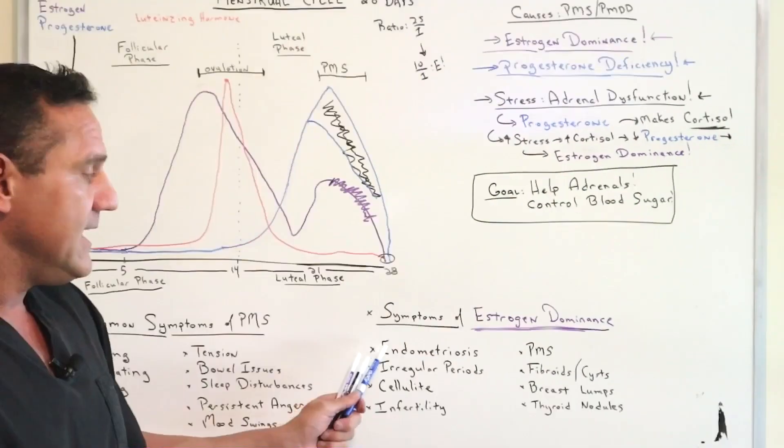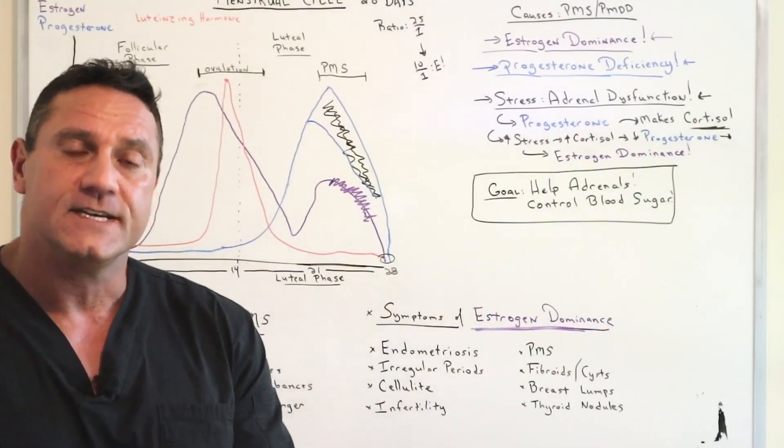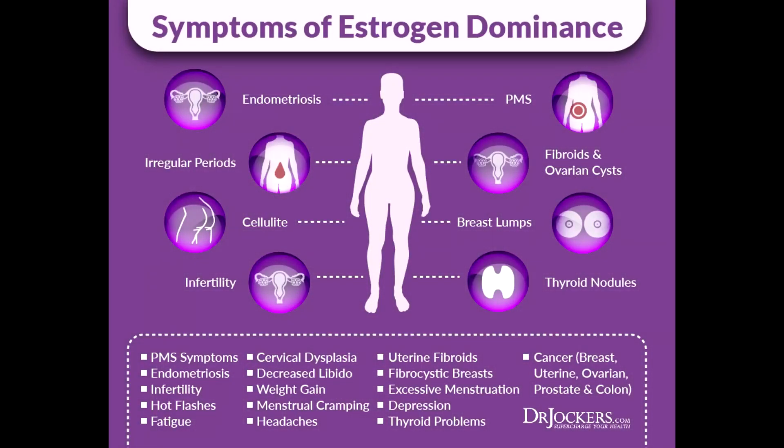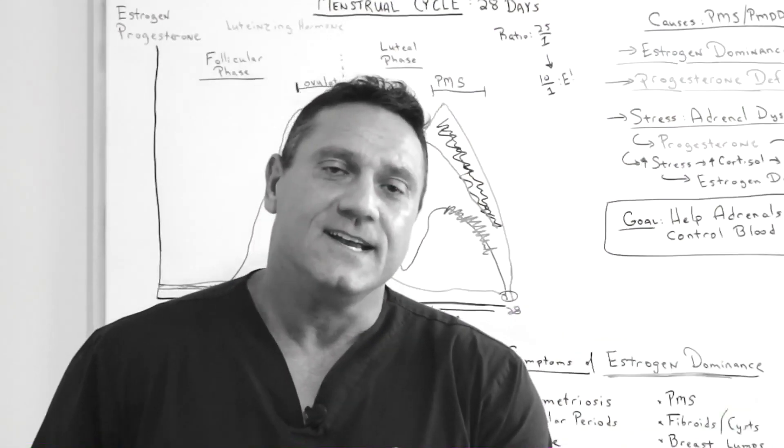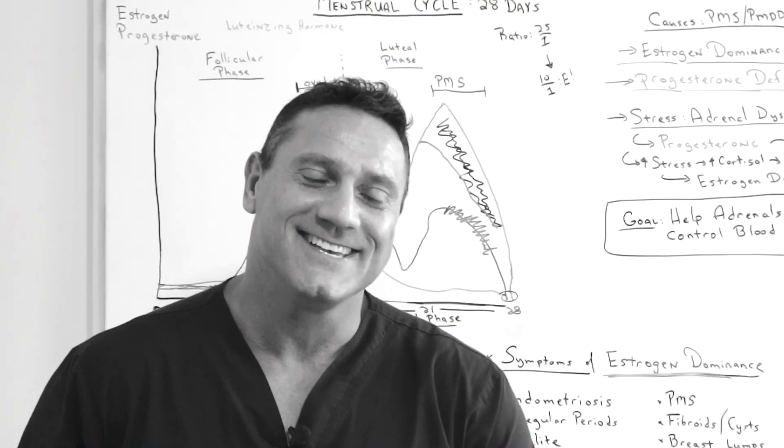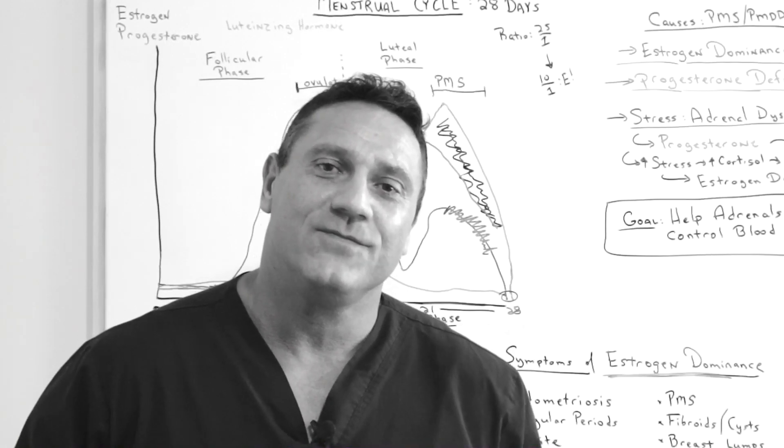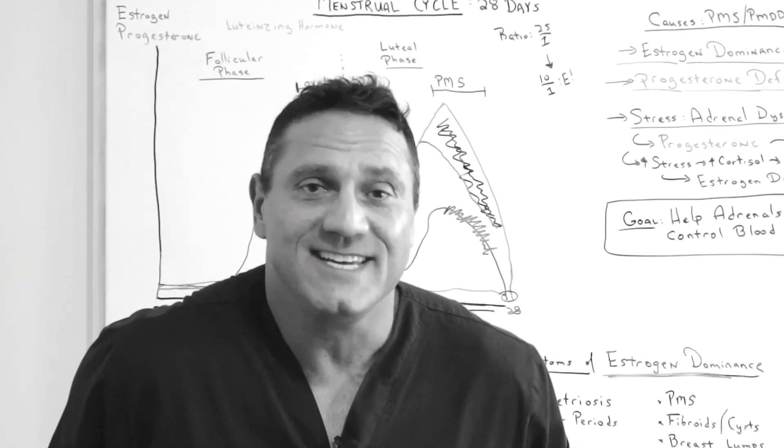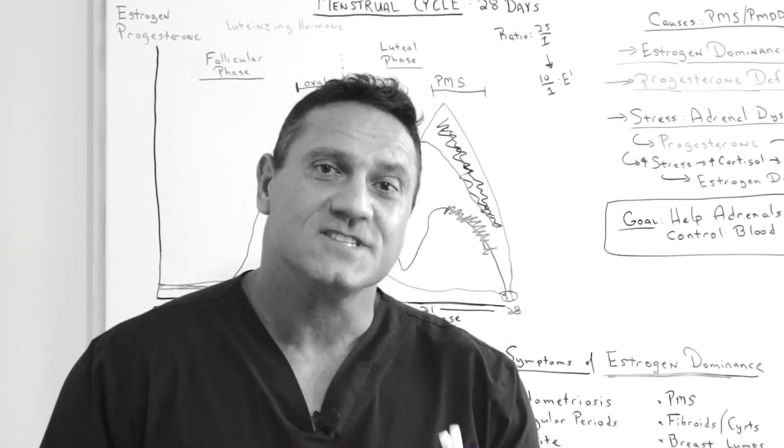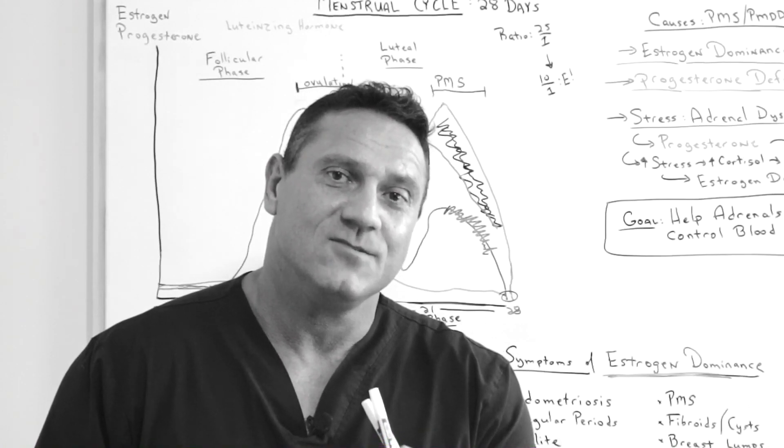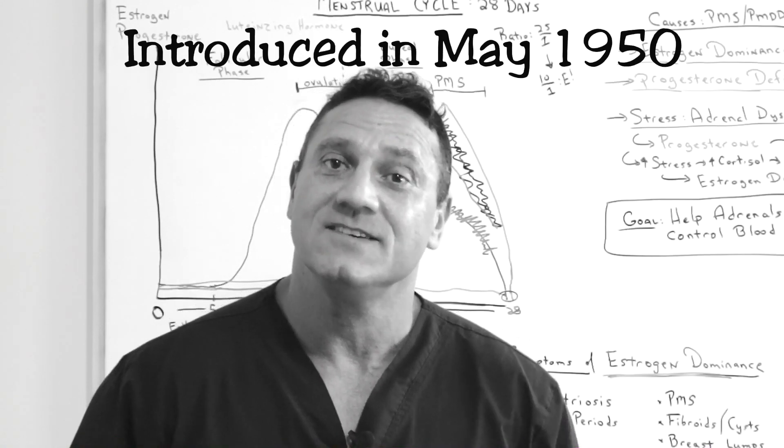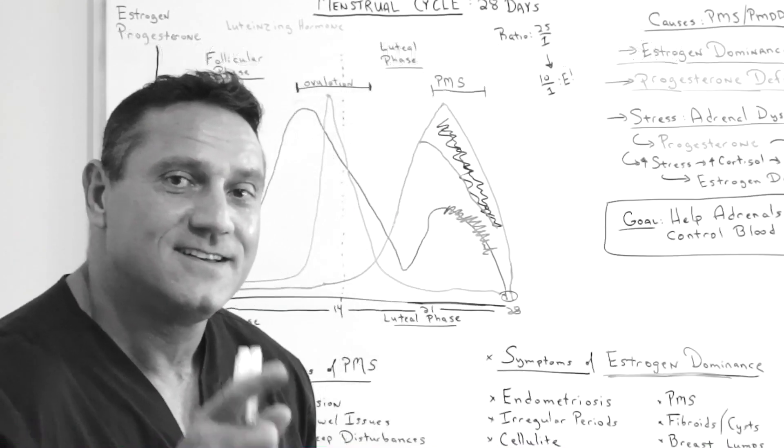So let's talk about estrogen dominance. Symptoms of estrogen dominance: endometriosis, because what's the function of estrogen? Cell replication. Irregular periods, your hormones are all imbalanced. Cellulite. Believe it or not, you're going to like this. Before the advent of the birth control pill, women had no cellulite. The first birth control pill that came out was loaded with estrogen. And that's where cellulite occurred because you have too much estrogen. Look that up.